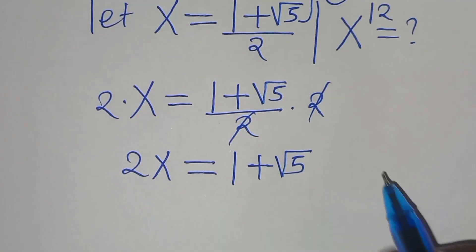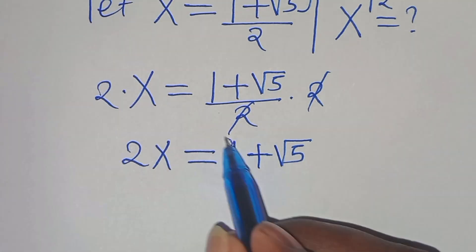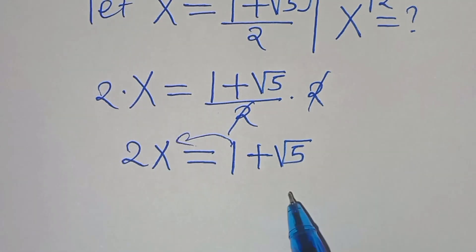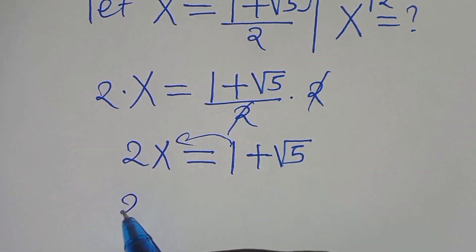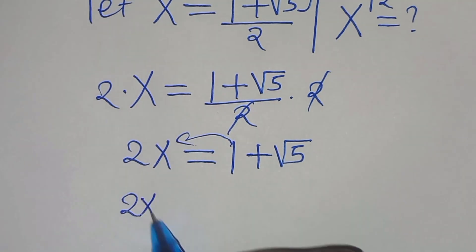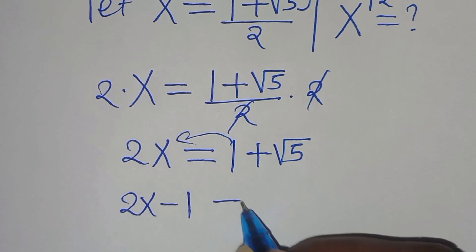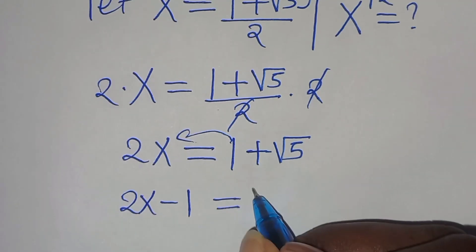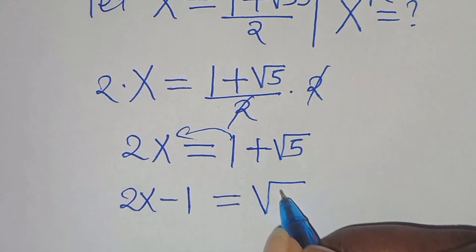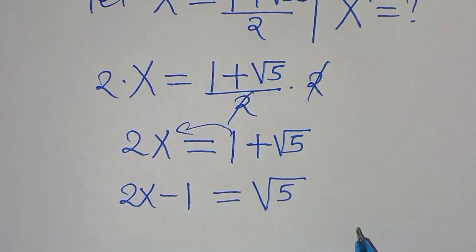Now let's take 1 on the left hand side so that we have 2x minus 1, this is equal to square root of 5.